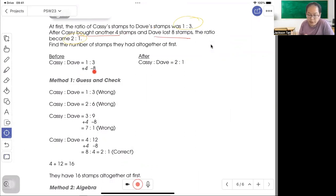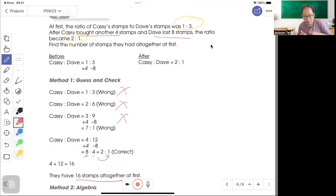So at 4 minus 8, there are two ways. One is guess and check. So you assume that it's 1 to 3, but 1 plus 4 equals 5, 3 cannot be over 8, so you try again, it's wrong. You try again, also wrong. Try again, wrong. Eventually you get 4 stamps to 12 stamps and it's correct: 4 plus 4 is 8, minus 8 is 4, simple form 2 to 1. So A plus 4, they have the stamps altogether.